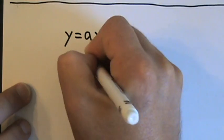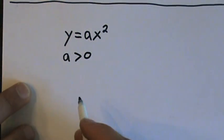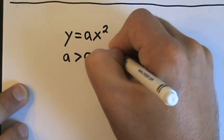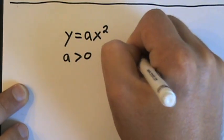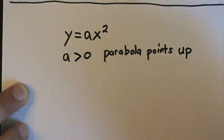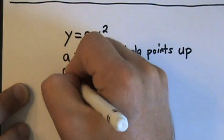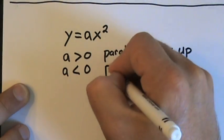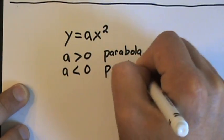If a is greater than 0, that is, a is a positive number, the graph points up. So the parabola points up. If a is a negative number, that is, it's less than 0, the parabola points down.